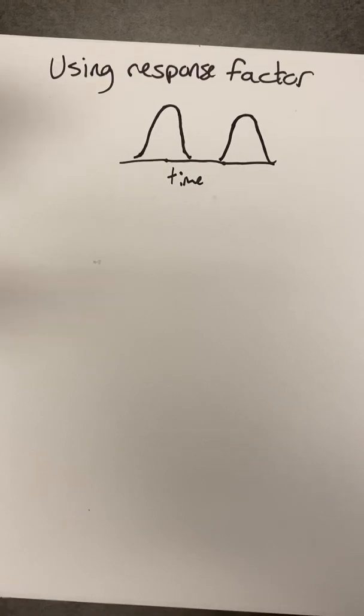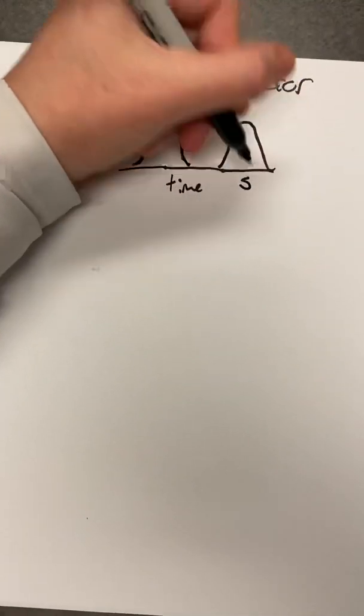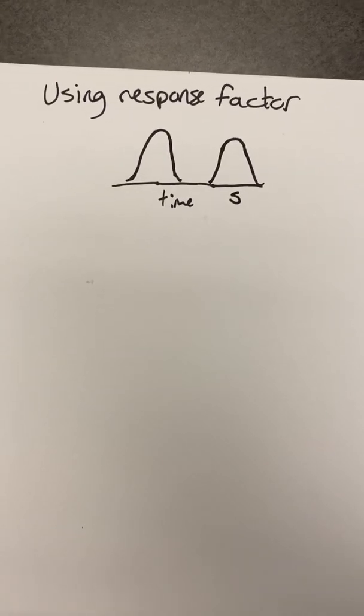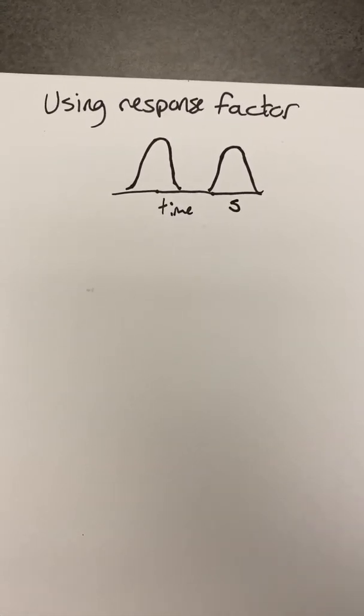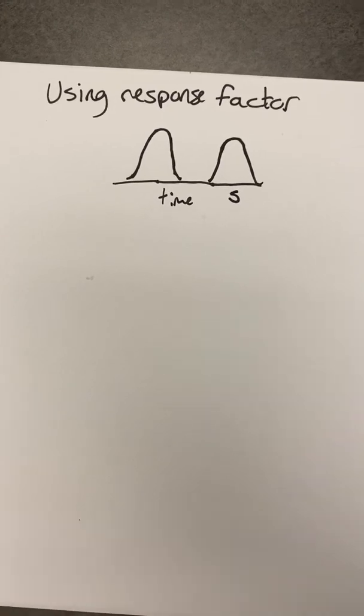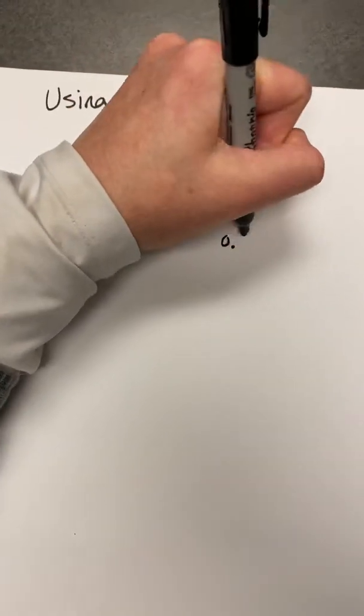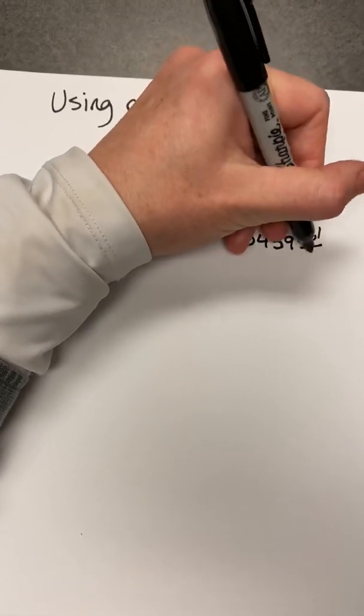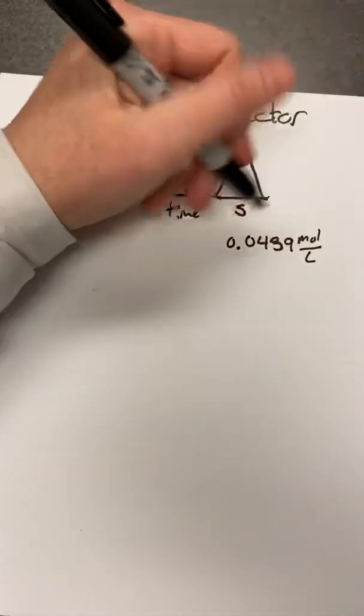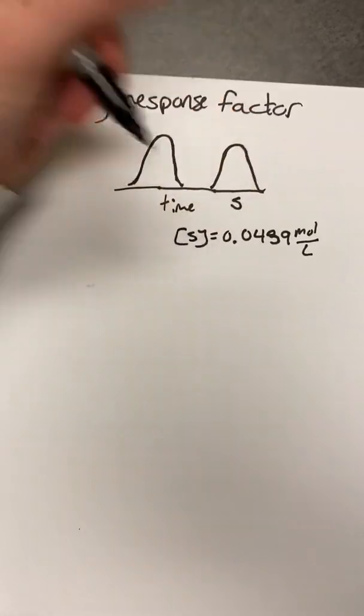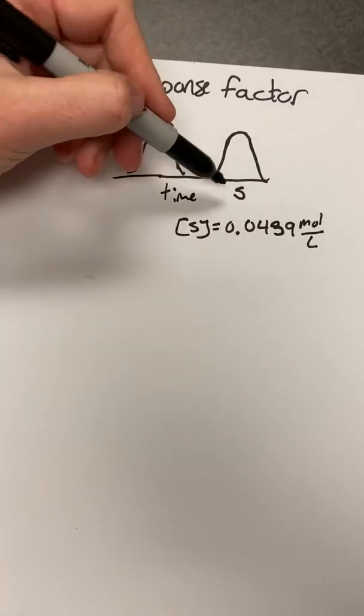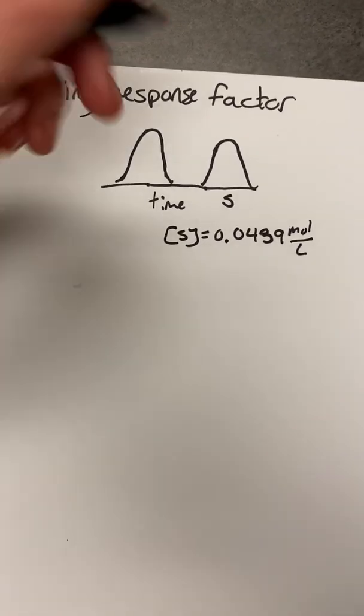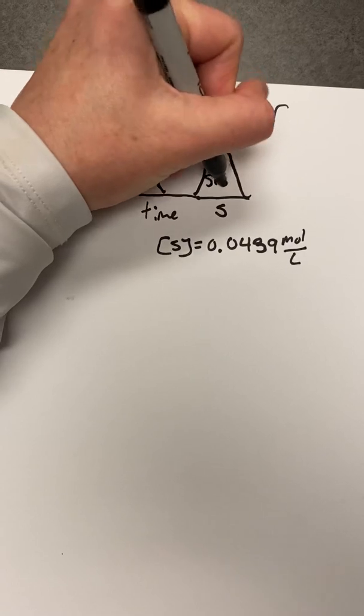So let's say you have an internal standard, we'll go ahead and call that S, and let's say that you run an internal standard, you know exactly how much is in there. For example, let's go ahead and say that you know that the concentration of the solution that you ran is 0.0439 mol per liter. So that would be your S concentration. And you get this pretty little peak for your standard there, and you find out that it has an area about 518.